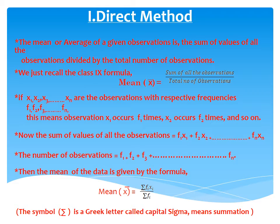The first method is the direct method. The mean or average of a given observation is the sum of values of all the observations divided by the total number of observations. The mean is denoted by the symbol x-bar, equal to the sum of all observations divided by the total number of observations. If x1, x2, x3 till xn are the observations with respective frequencies f1, f2, f3 till fn,